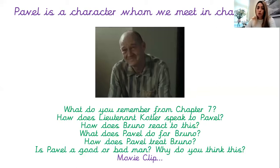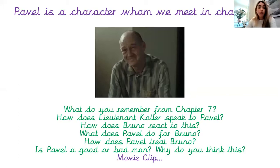How does Pavel treat Bruno? What kinds of things does he say and how does he say it? Is Pavel a good or a bad man, and why do you think that? Those are just some questions to have a little think about what we already know about Pavel from having read Chapter 7. What I'm going to do now is show you a clip from the movie, which will kind of summarise a little bit about what Chapter 7 was.